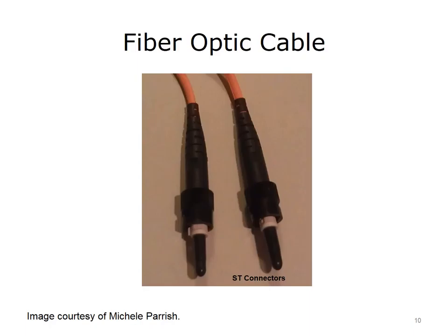Fiber-optic cables transmit light signals instead of electrical signals. They are made up of the core that carries the light pulses, the cladding that reflects the light pulses back into the core, and the buffer coating that protects the core and cladding from moisture and damage. The fibers are the size of a human hair. Fiber is faster and more expensive than copper cables. Signals transmitted over fiber can experience optical loss, similar to attenuation for copper cables. Commonly used connectors include straight-tip (ST) and subscriber connector (SC) connectors.